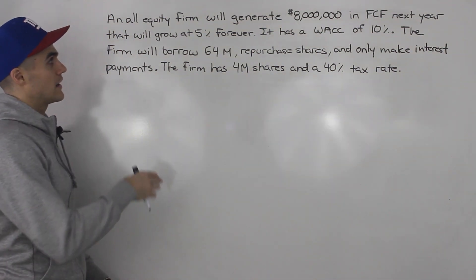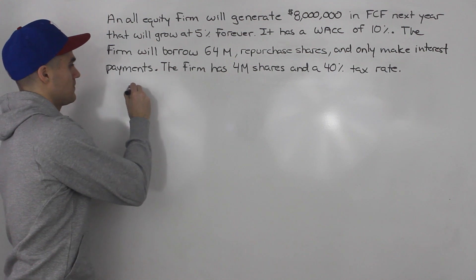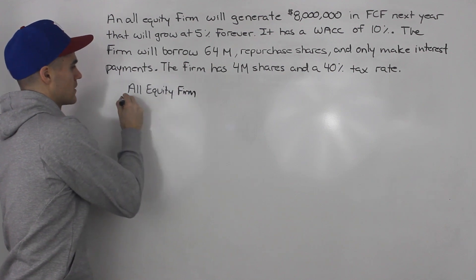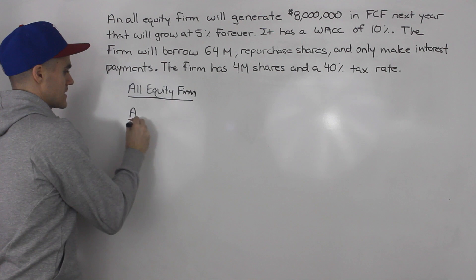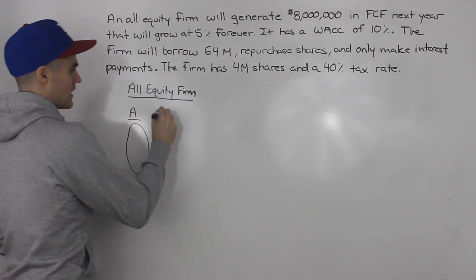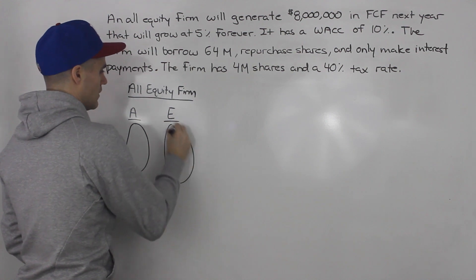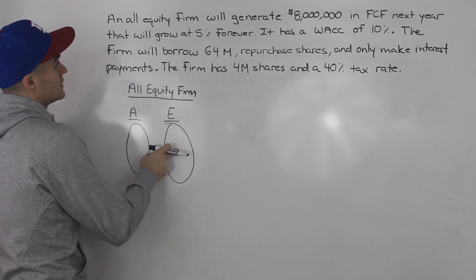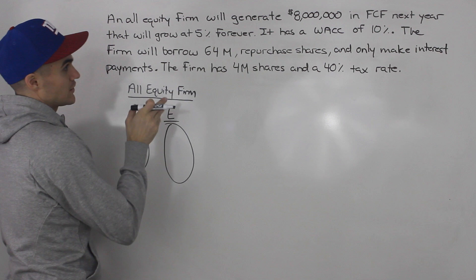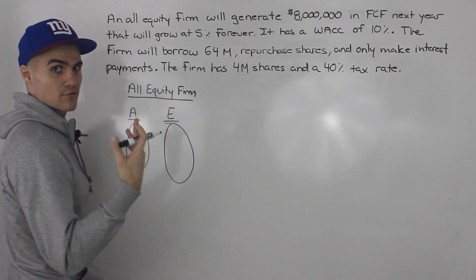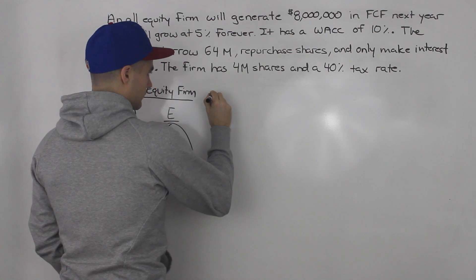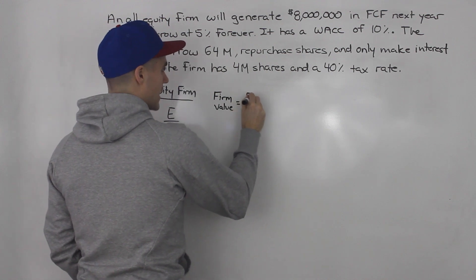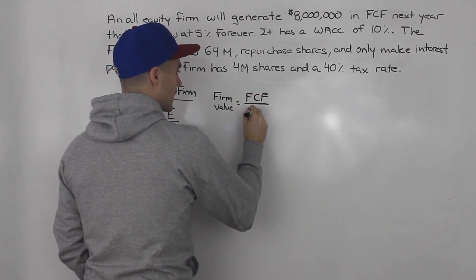We're going to start by creating a balance sheet for the all-equity firm before they go through their restructuring — before they issue the debt. So we'll have assets on the left side and equity on the right side with no debt. Now, so far we've been saying that the firm value is the free cash flow of a firm over its weighted average cost of capital.